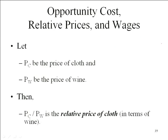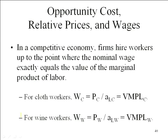Now, let's think about prices. How do we deal with prices in all of this? P sub C is the price of cloth. P sub W is the price of wine. The ratio of the price of cloth to the price of wine is simply called the relative price of cloth — it's always the term in the numerator. In a competitive economy — one of our assumptions was production took place under conditions of perfect competition — workers will be hired up to the point where their nominal wage equals the value of their marginal product of labor. So the nominal wage will simply be the price of cloth divided by the labor requirement.